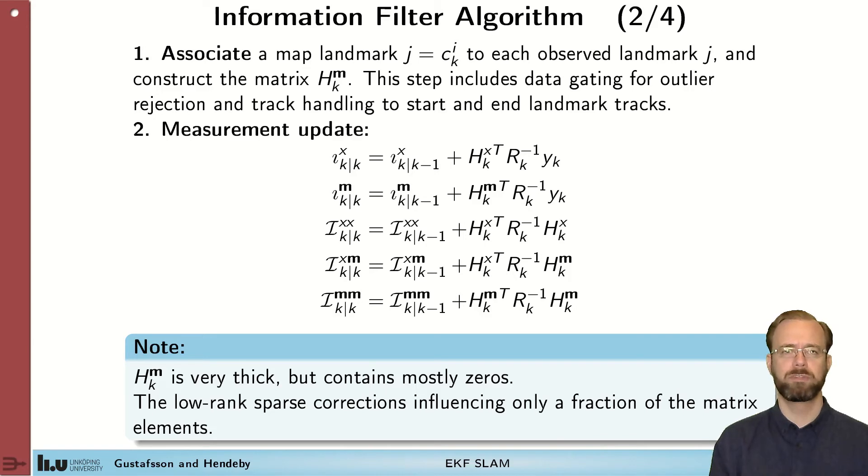The information form of the filter then becomes these steps. We have the association step where we associate a landmark with the measurements that we have gotten. We're not discussing this further but as I said this is an important step to perform proper SLAM. We have the measurement updates which given the structure of the problem becomes these low rank updates here. Quite straightforward. We only touch a few elements in this big matrix.